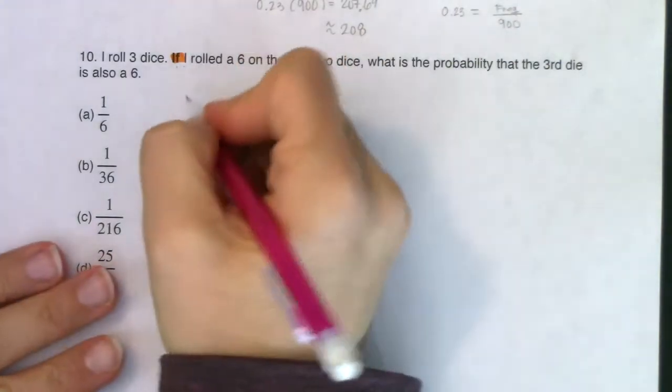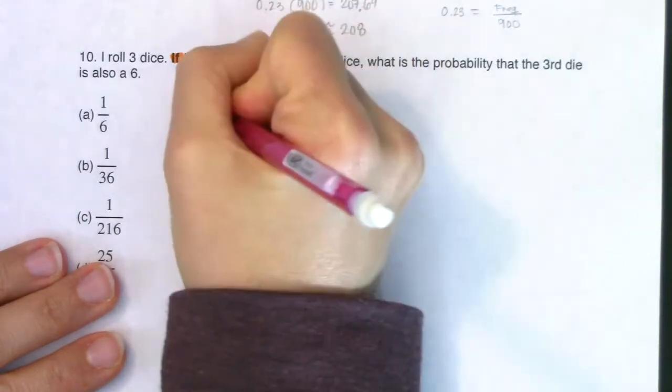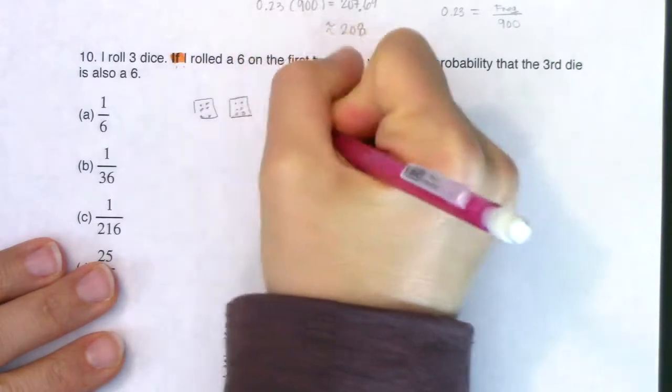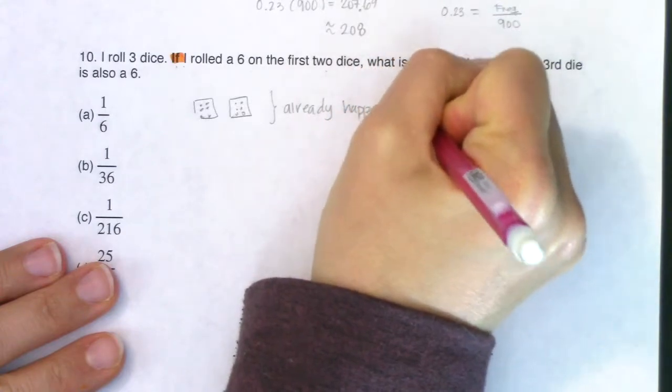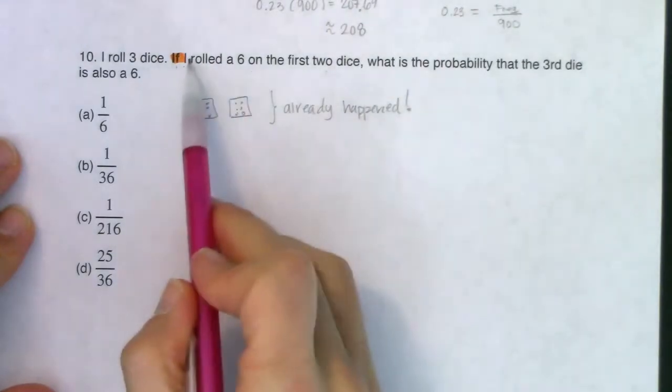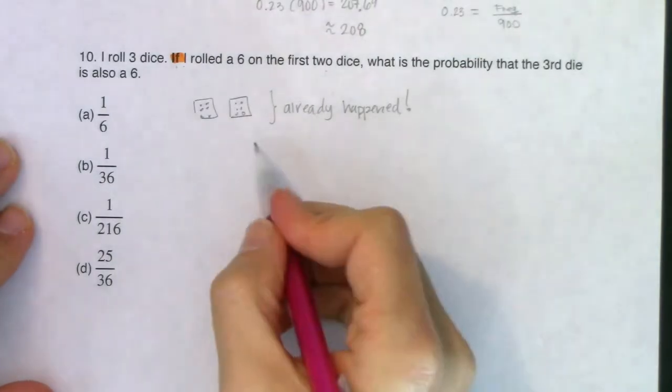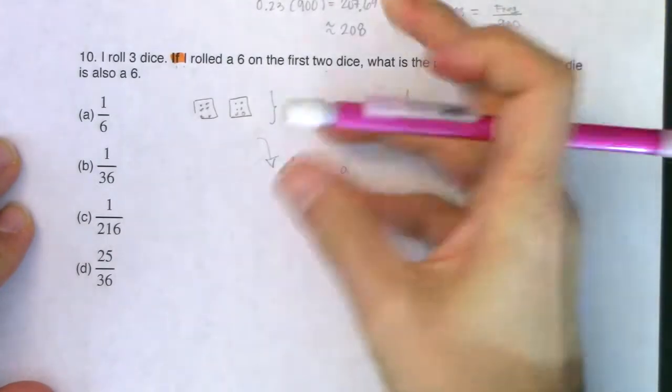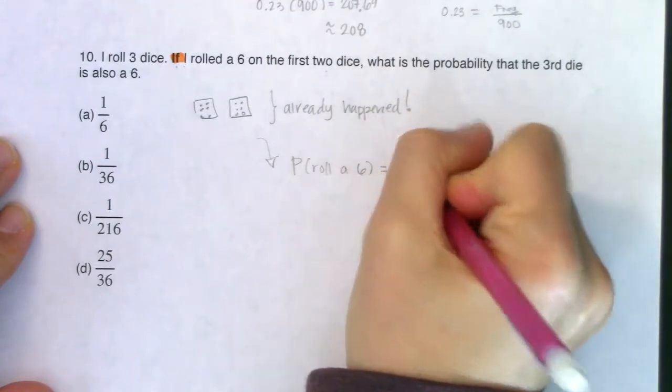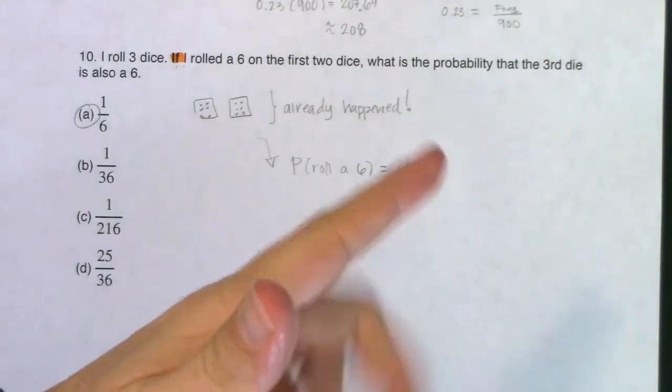So when I'm rolling my three dice, you already know you've got a six, and then another six. That happened. Already happened. You don't even have to fret on it. I already rolled two sixes. So if I rolled a six on the first two die, what's the probability that on that third die, I would roll a six? So if I'm only going to roll one more die, what's the probability of rolling another six? It's just one out of six. Nothing more to it than that.